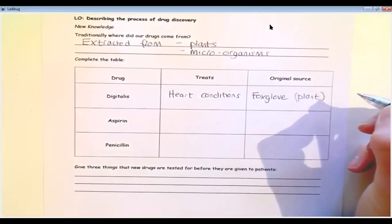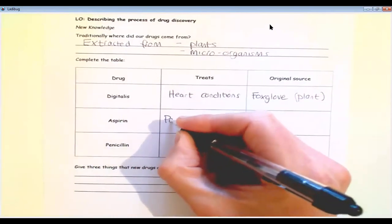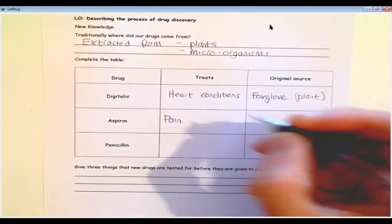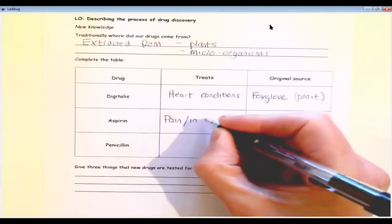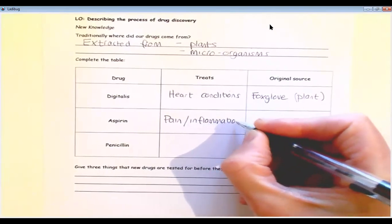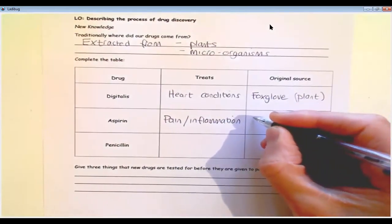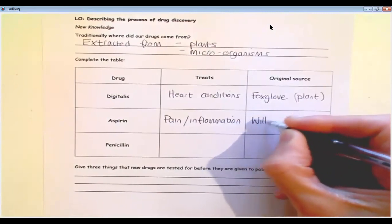The second drug we have on our list is aspirin, which I'm sure everybody has heard of. And aspirin is used to treat pain—it's a painkiller—but it's also used to treat inflammation. Inflammation is where we get redness and swelling. And aspirin has come from the willow tree.